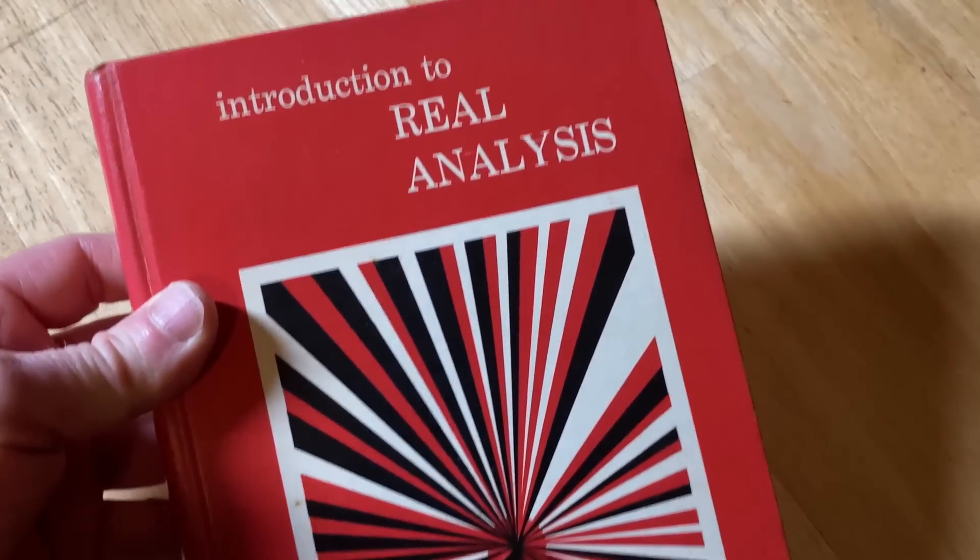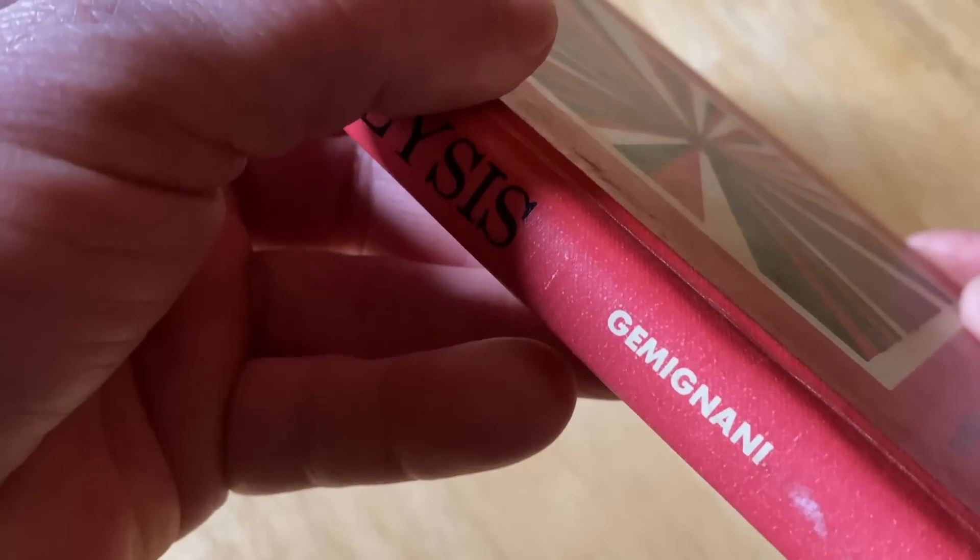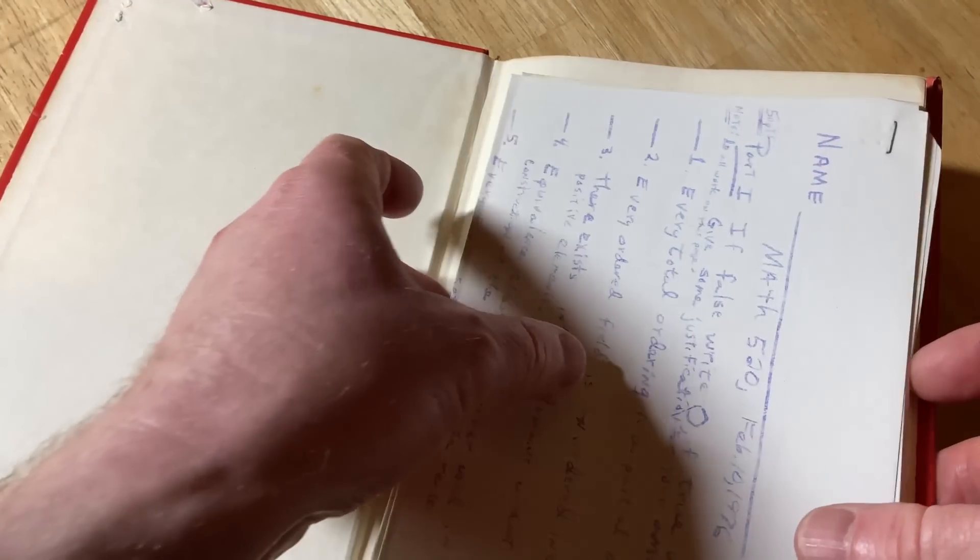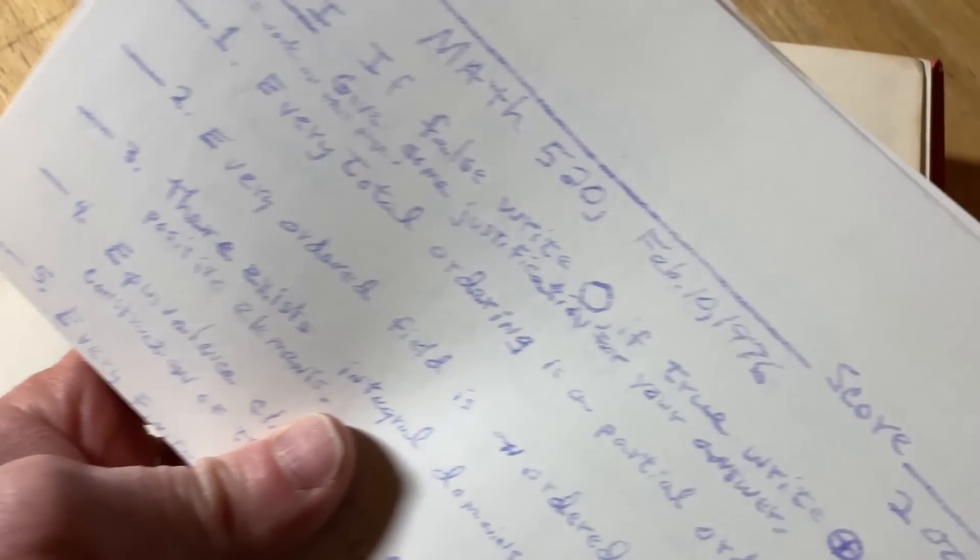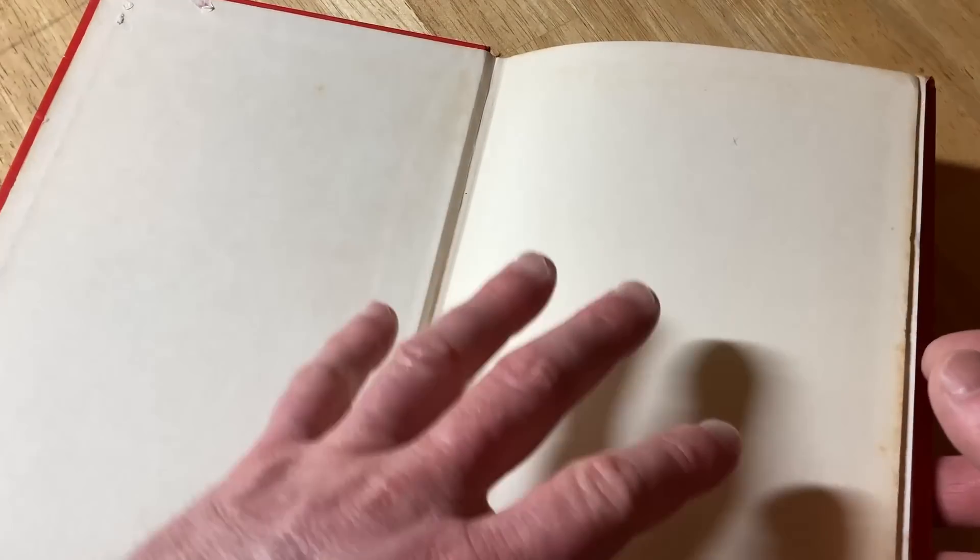This one has a really cool cover. This is Introduction to Real Analysis. And let's open it up. It's by Gemmignani. And inside we have Treasures. Ooh, what's this? 1976. Wow, really, really old.